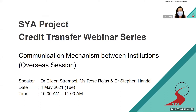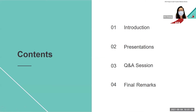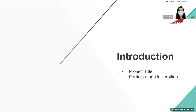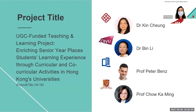Here is the rundown: I will give an introduction first, then presentations, and Q&A at the end. You can post your questions in the chat box. Our project is a UGC-funded teaching and learning project titled 'Enriching Senior Year Place Students' — in the US literature, these are called vertical transfer students. The project aims to enrich their learning experience through curricula and co-curricular activities in Hong Kong universities, involving four universities: Hong Kong Polytechnic University, City University, Baptist University, and Chinese University of Hong Kong.